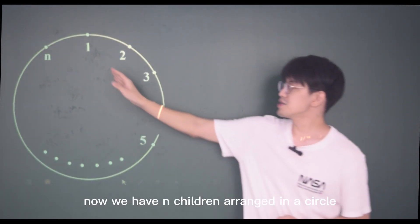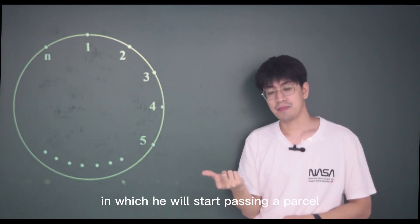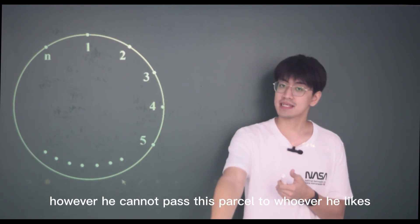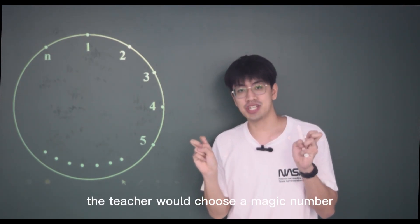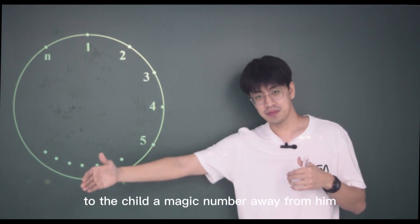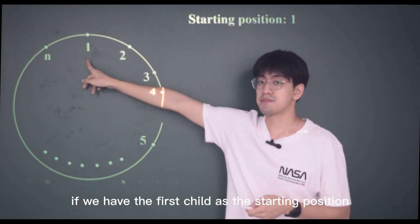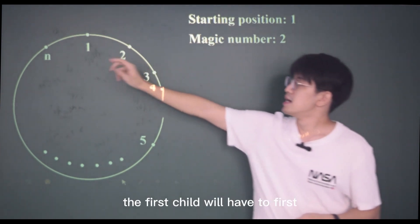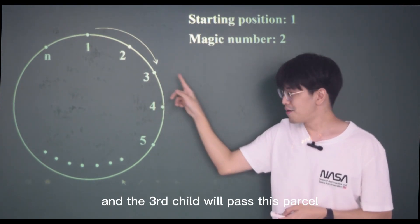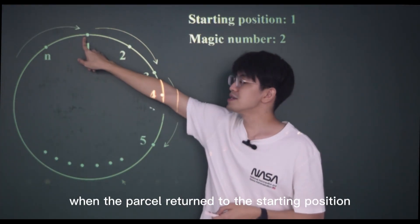We have N children arranged in a circle. The teacher would assign one of the children as the starting point, in which he would start passing a parcel. However, he cannot pass this parcel to whoever he likes. The teacher would choose a magic number, such that he can only pass this parcel to the child a magic number away from him. For example, if we have the first child as the starting position with the magic number two, the first child will have to pass this parcel to the third child, and the third child will pass this parcel to the fifth child, and so on. The round ends when the parcel returns to the starting position.